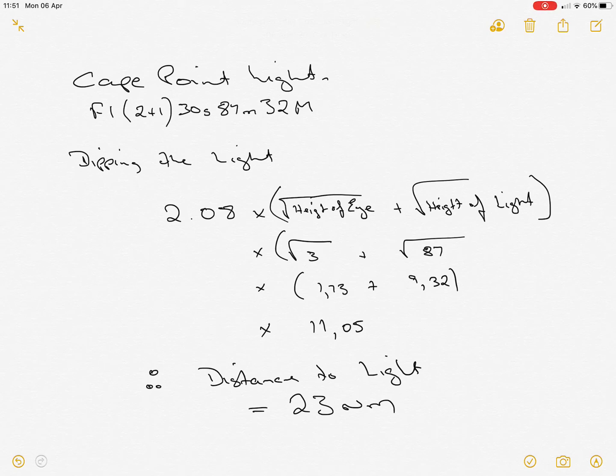Okay, this exercise is about trying to establish a distance away from a light as you come over the horizon. You first see the light flashing. We call it dipping the light. It's pretty straightforward.